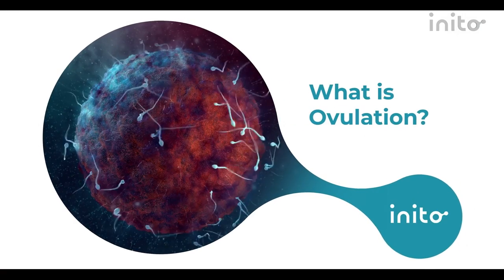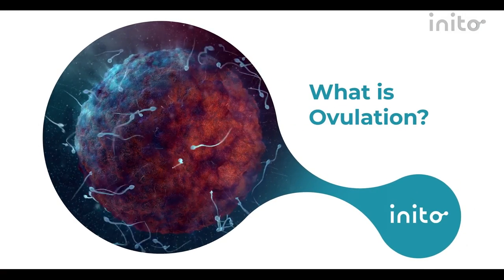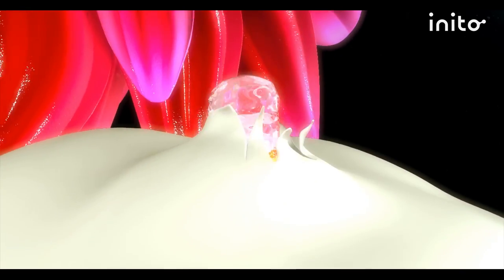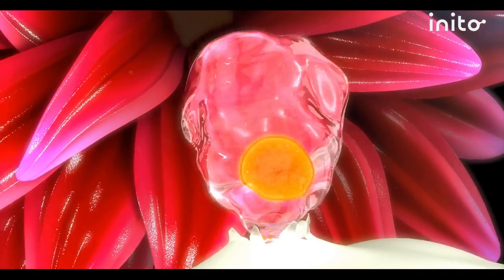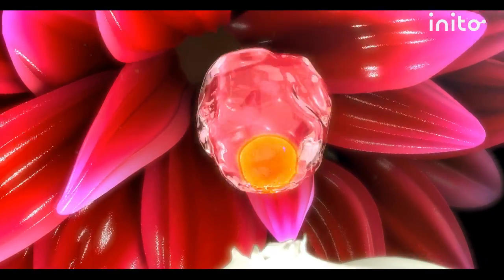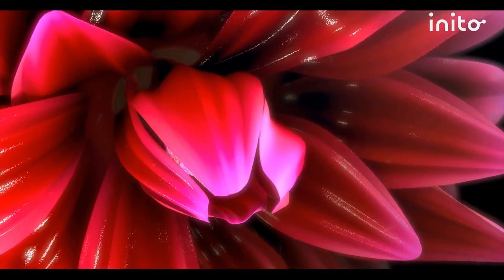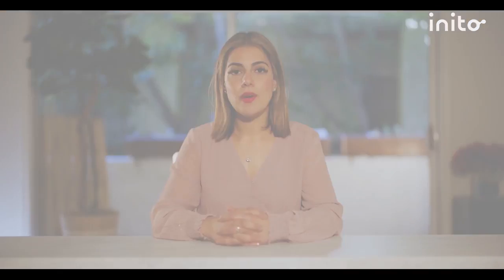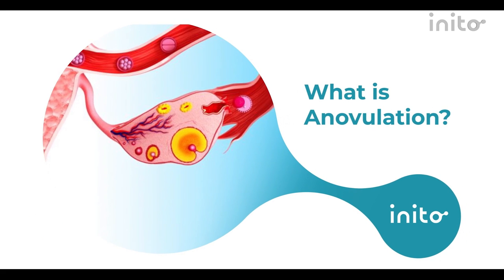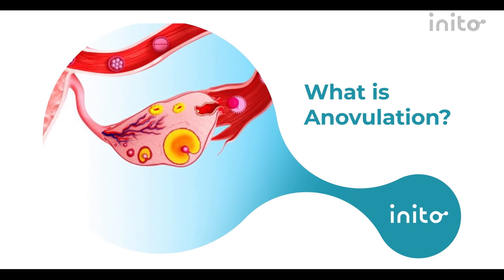First off, what is ovulation? Ovulation is the time during your monthly cycle when an egg is released and is able to be fertilized, which results in pregnancy. But what you may not know is that ovulation does not always happen. Sometimes you have an anovulatory cycle — anovulation simply means that it's a cycle where your body does not release an egg.